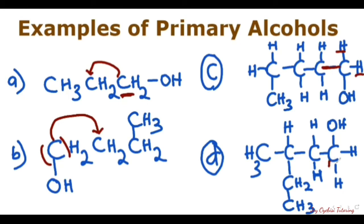For this carbon — the one bearing the OH — when you're dealing with classification, you're not bothered with all the other things happening. You just concentrate on the carbon that has your OH group. So for this one, the carbon bearing the OH group is attached to just this one carbon. These are examples of primary alcohols, and this is how you classify them based on the number of carbons.